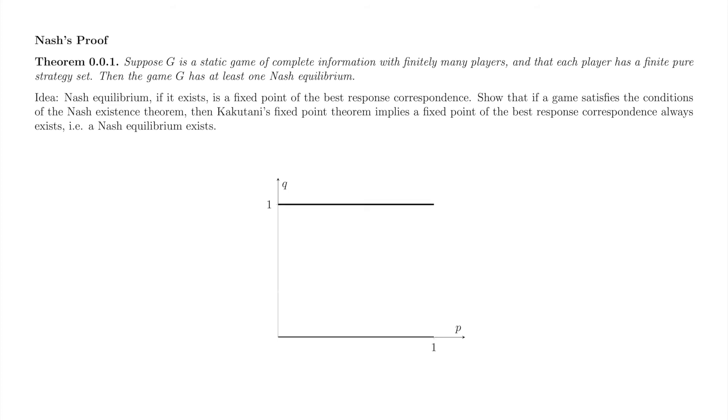Nash showed that player one's best response function is continuous, and connects the two thick black lines on the top and bottom of the square. Player one needs to pick p to best respond to q equals zero. All such p get graphed on the bottom black line. Player one also needs to pick p to best respond to q equals 1. All of these p get graphed on the top black line. Continuity approximately follows from the idea that small changes in q result in small changes in player one's best response.